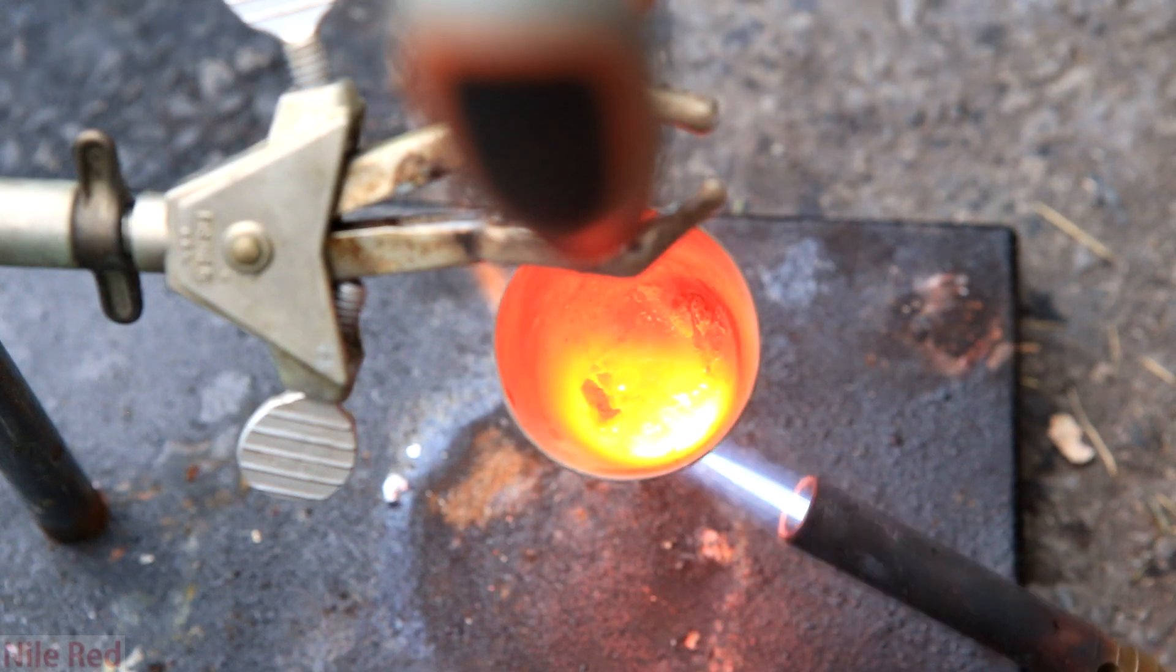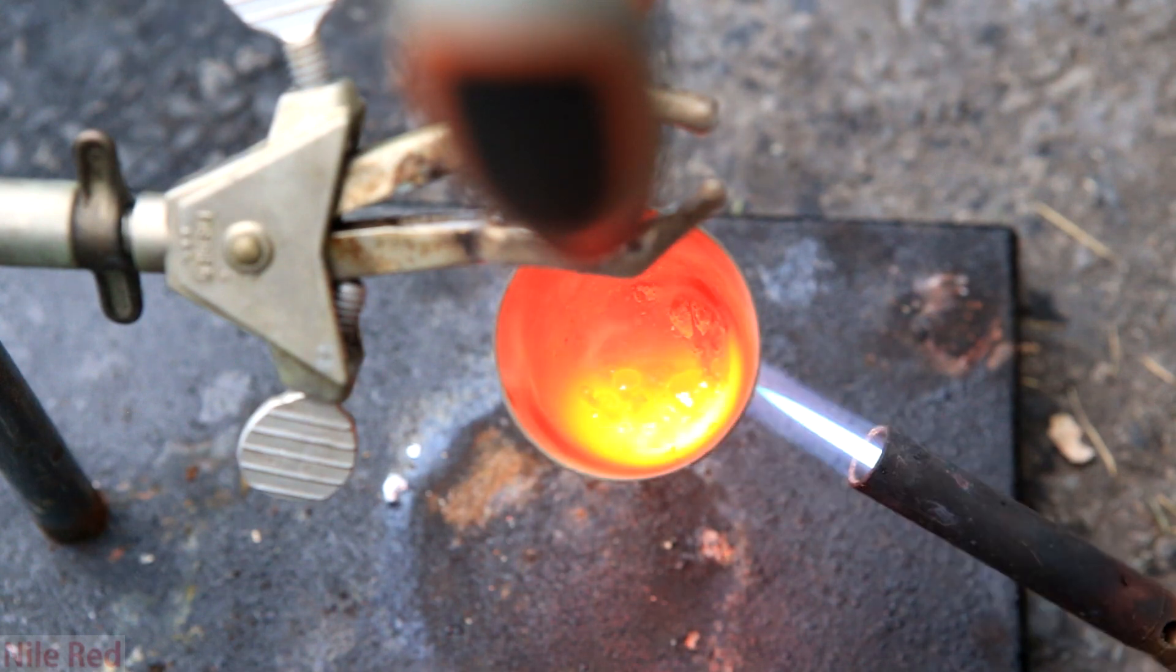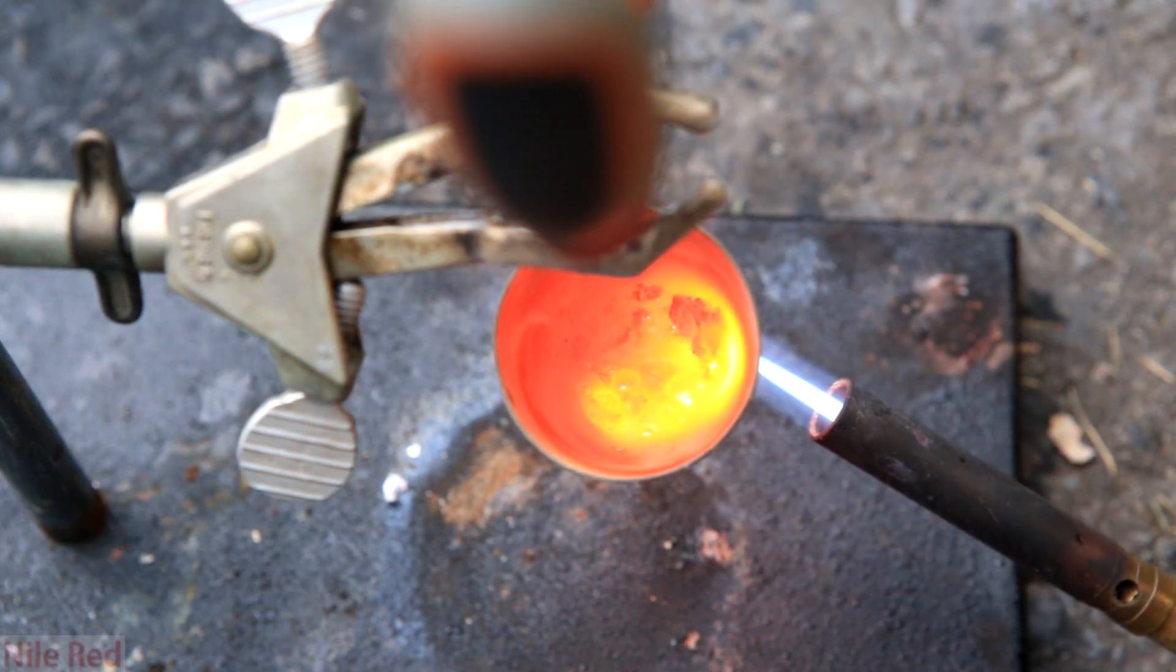When heated up slightly, the bismuth reacts with the oxygen to form bismuth oxide, but when heated extremely hot, the bismuth oxide will break down to reform bismuth metal and the oxygen.